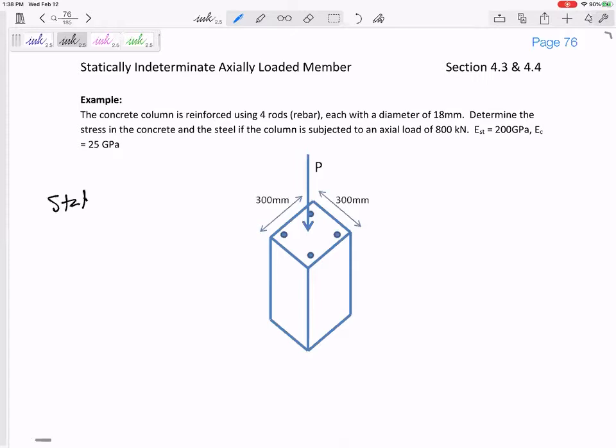All right, so from statics, that load, 800 kilonewtons, some of that goes to the concrete, some of that goes to the rebar. We could draw a free body diagram, but the force in the steel rebar and the force in the concrete will add up to that 800. And I'm going to do 800,000 so that I'm in newtons.